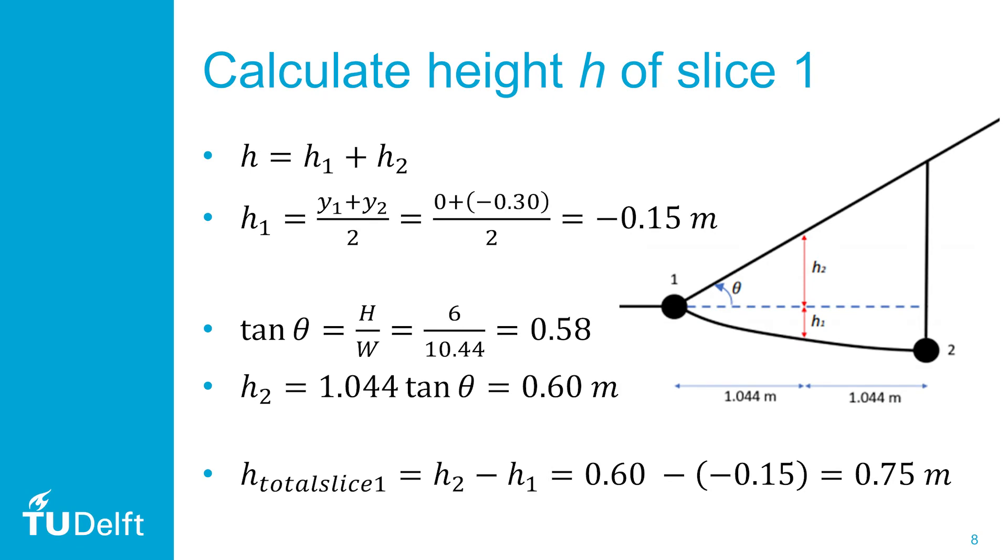To calculate the height h, it is easiest to split the height into a part above the ground level and a part that is below the ground level. The ground level is indicated by the blue dotted line. H1 can be calculated with the vertical coordinates y that are given in the table, again here assuming a straight line between the points. Note that we use the sign convention of negative below the ground level.